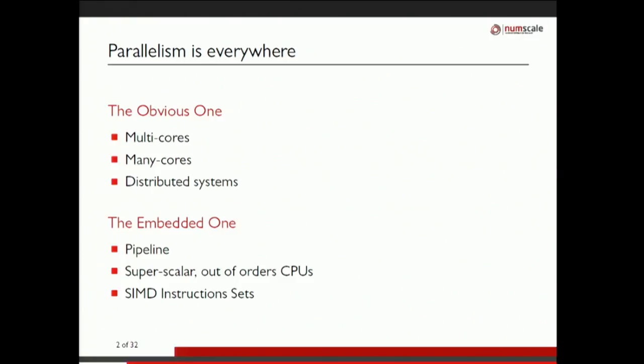You have the obvious parallelisms like the multi-core systems, many processors, many cores, accelerators, distributed systems of all shapes and kinds. And you have another kind of parallelism which is actually there from far before, which is more shy. You have all the internal instruction level and word-level parallelism inside the CPU.